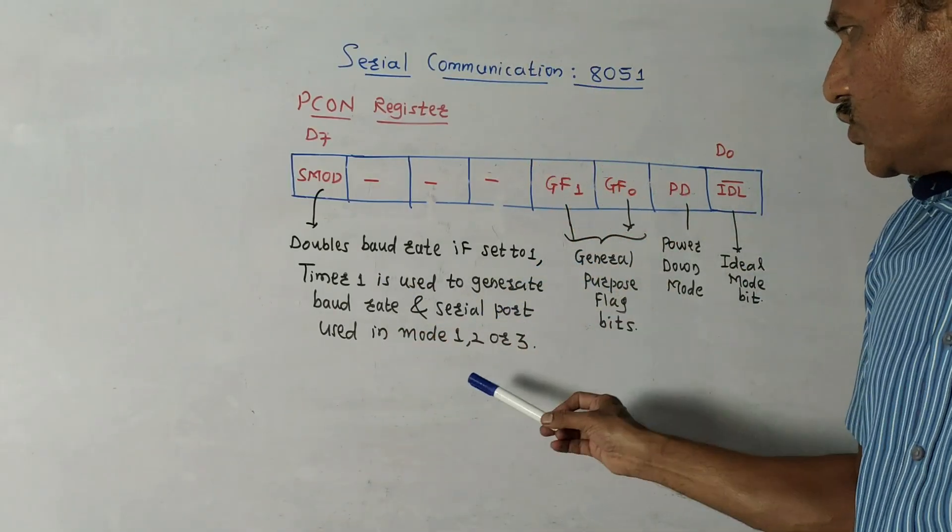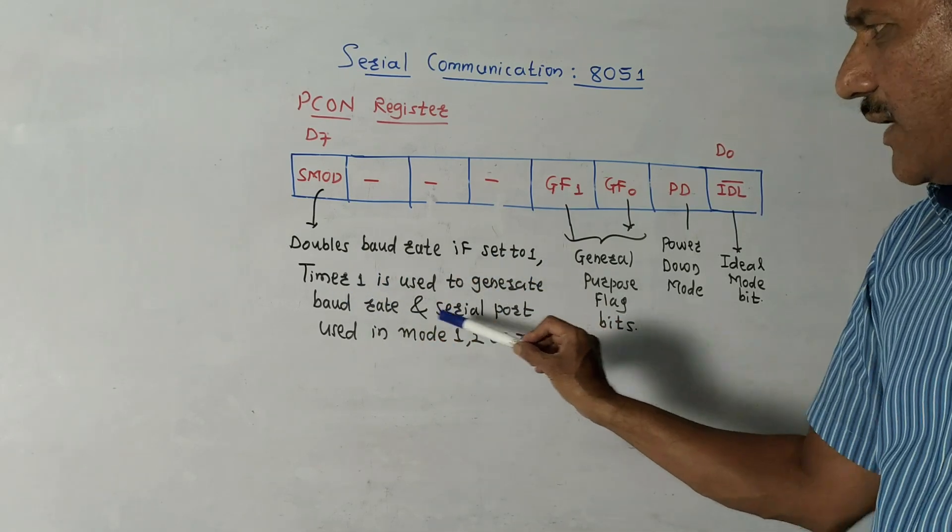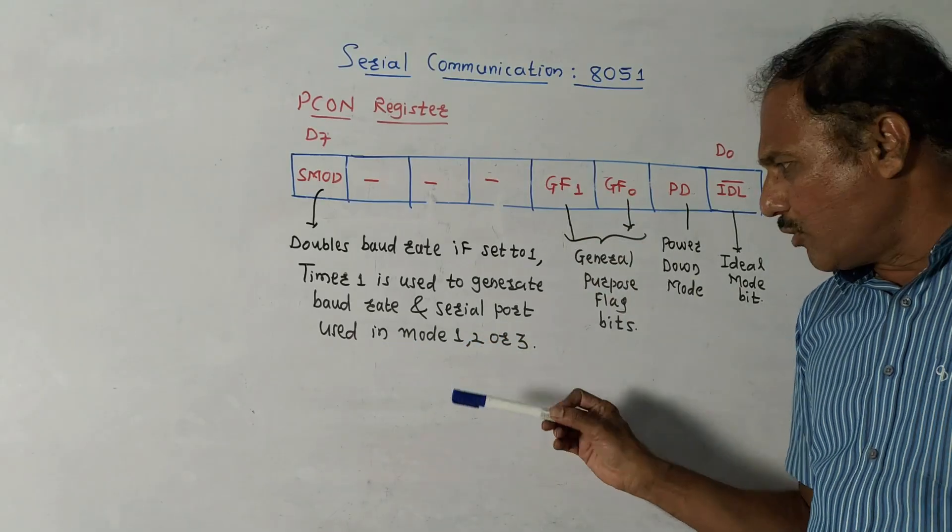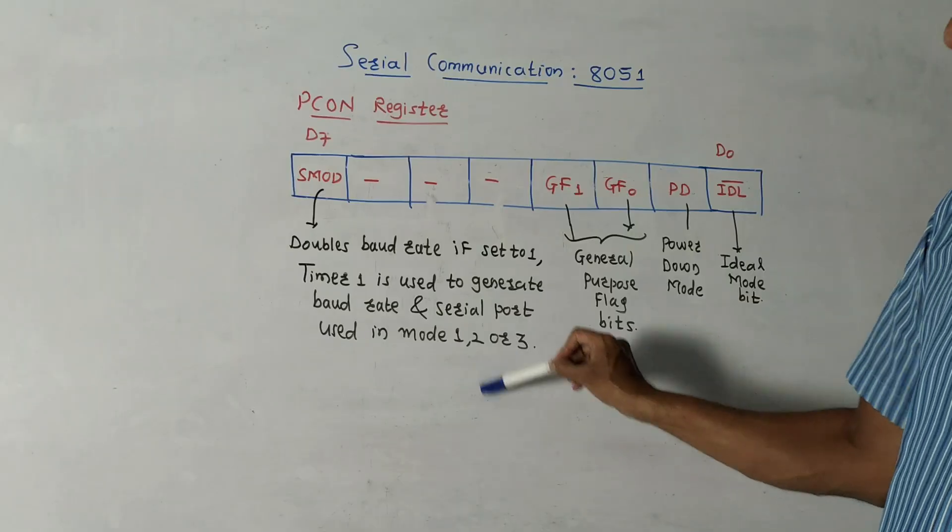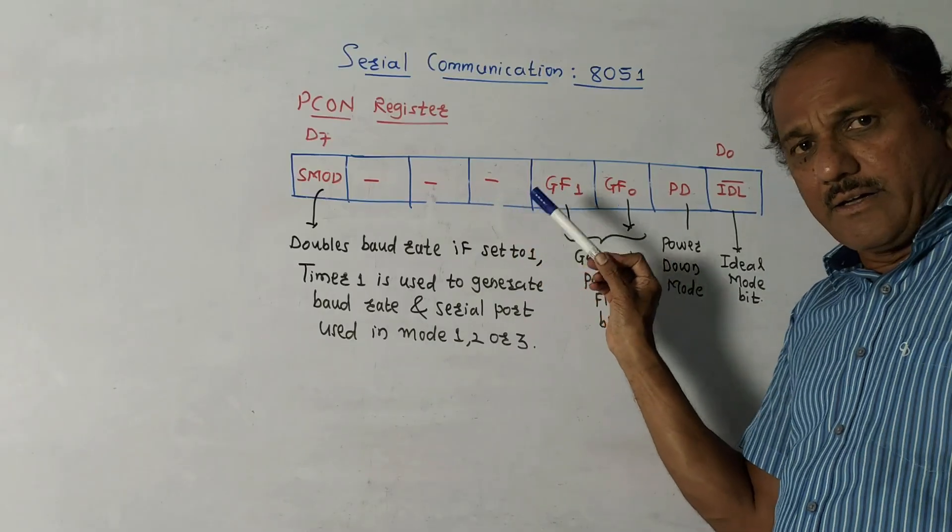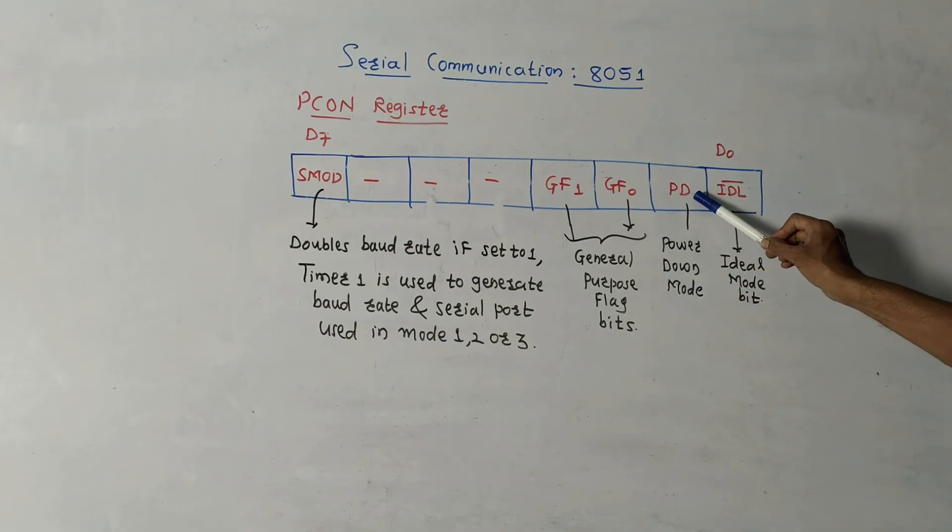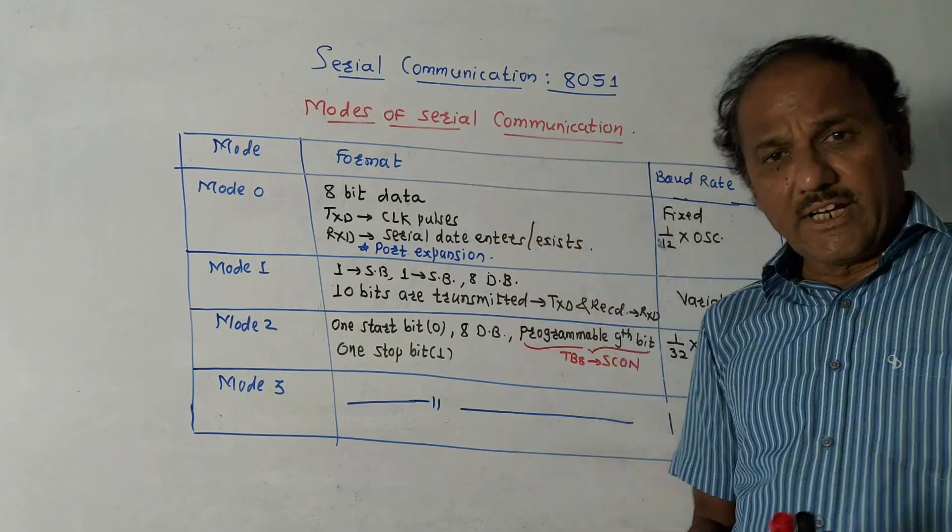It is used in timer one mode. Important is that timer one mode is used and serial port can be in mode one or mode two or mode three. Next three bits, I am reading the bits from MSB to LSB, next three bits are reserved. Then GF1 and GF0, these are general purpose flag bits. PD, as the name indicates, if you set this bit then it will go to the power down mode. IDL, as the name indicates, if you set this bit then it will perform idle mode bit operation.